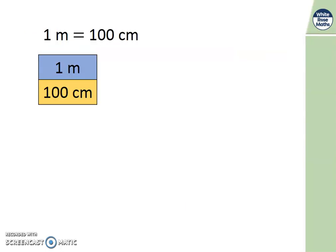We could use a bar model to show the same idea. That 1 metre is equal to 100 centimetres. Because the bars are exactly the same size. They start at the same place and they finish at the same place. 1 metre is equal to 100 centimetres.